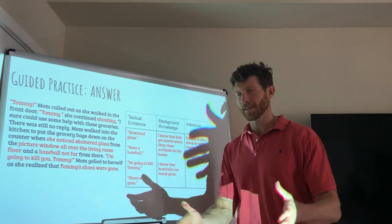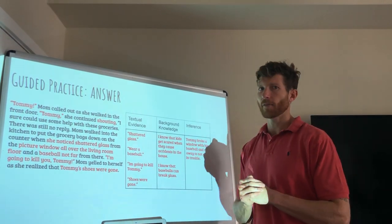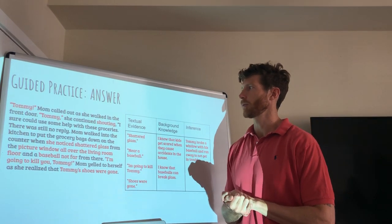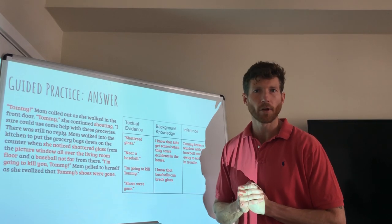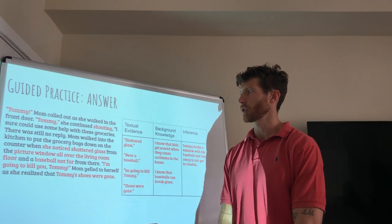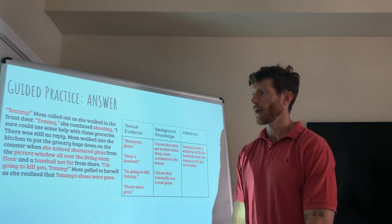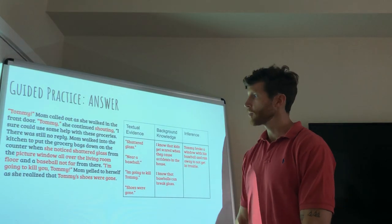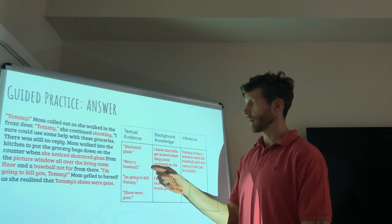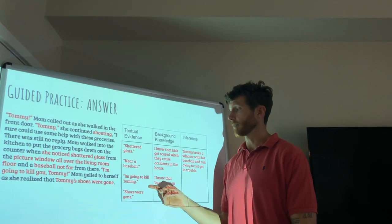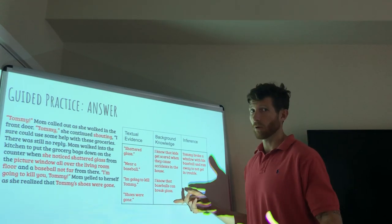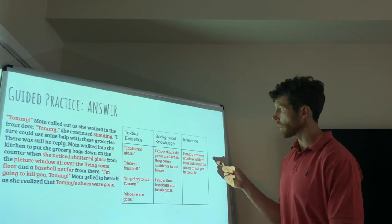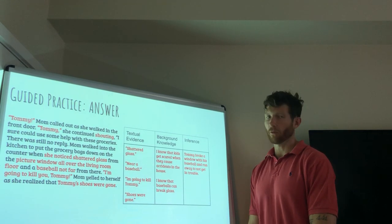Guided practice answers. I'll do one read of the text since you've already read it multiple times. Tommy, mom called as she walked in the front door. Tommy, she continued shouting. I sure could use some help with these groceries. There was still no reply. Mom walked into the kitchen to put the grocery bags down when she noticed shattered glass from the picture window all over the living room floor and a baseball not far from there. 'I'm going to kill you, Tommy,' mom yelled to herself as she realized Tommy's shoes were gone. The textual evidence: shattered glass on the floor, a baseball on the floor, mom shouted 'I'm going to kill Tommy,' and Tommy's shoes were gone. Background knowledge: kids get scared when they cause accidents, and baseballs can break glass. The inference: Tommy broke a window with his baseball and ran away to avoid getting in trouble.